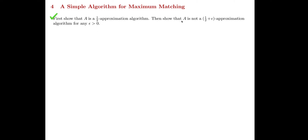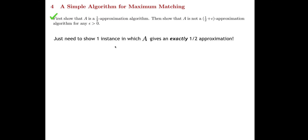For the second part, we want to show A is not a one-half plus epsilon approximation algorithm. If it were, then for all inputs and all edge orderings, A would always give a matching that is at least a one-half plus epsilon fraction of the maximum. To disprove this, we just need one instance where A gives exactly a one-half approximation — then it cannot be one-half plus epsilon.